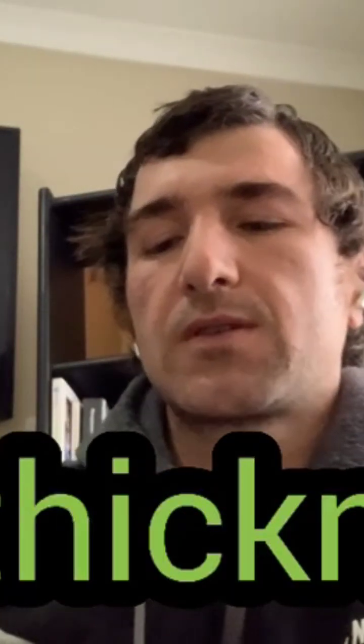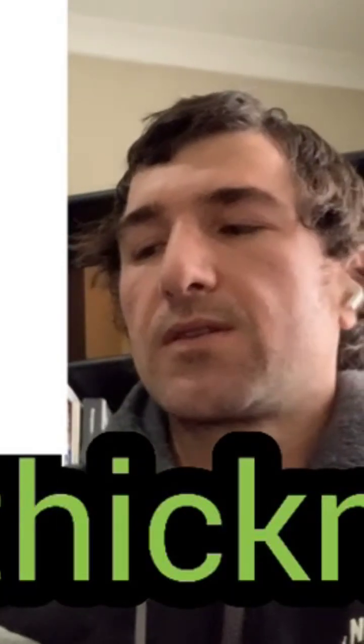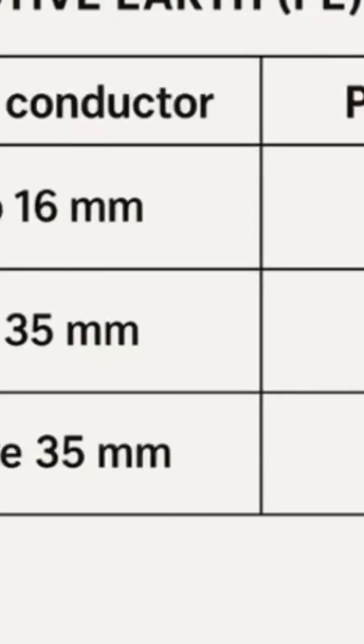Hi guys, I just want to go through a quick brief discussion on earthing conductor thicknesses in South Africa. The standard states that we are allowed to use a one-to-one ratio up until 16 millimeters squared. From 16 to 35 we use 16 millimeters squared, and then from 35 and up we use a 1 to 0.5 ratio, meaning that if your phase conductor is say 70 millimeters squared, then you use a 35 millimeter earth.